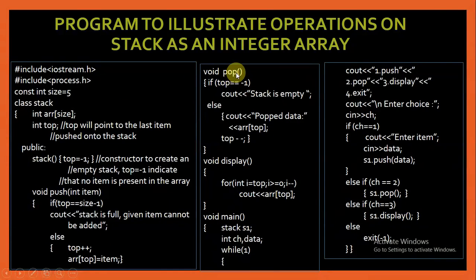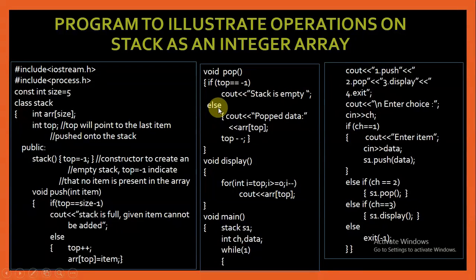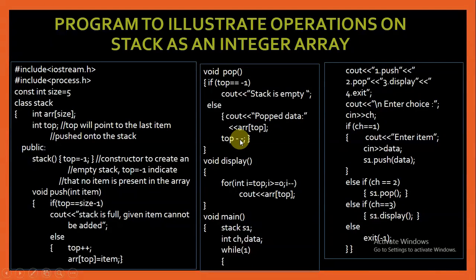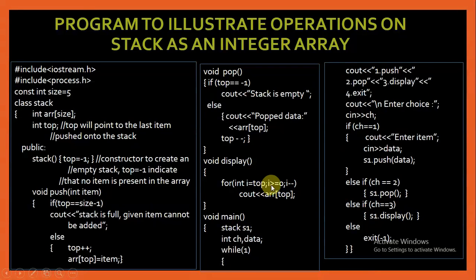The pop function checks if top is minus 1 — the stack is empty and we cannot perform any pop operation. Otherwise, we display the popped data which is the topmost element of the array and simply decrement top by 1. For the display function, we always start from top and go till 0, displaying all elements using a loop from top till 0, decrementing i by 1 each time.